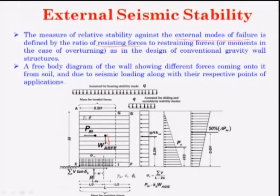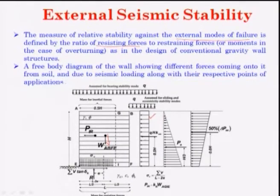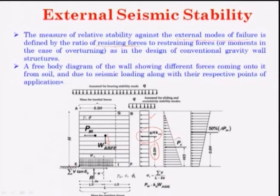The weight acts at the CG. The force P_IR is the lateral seismic inertia force acting in the lateral direction. For earth pressure due to surcharge, the resultant earth pressure acts at a distance of 0.5H from the base of the wall. For earth pressure due to soil mass, the resultant pressure P_a acts at a distance of H/3. The seismic force acts at a distance of 0.6H from the base.